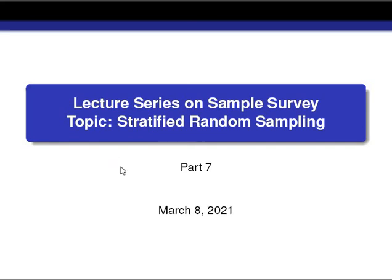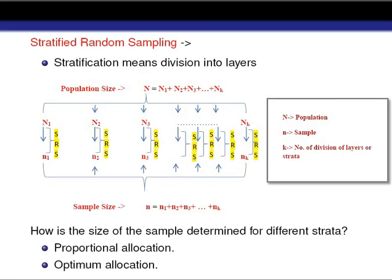In the previous part we discussed about simple random sampling, where each and every unit of the population has an equal probability of being selected in the sample. There is no case of biasness, and that's why the sample is a good representative of the population.